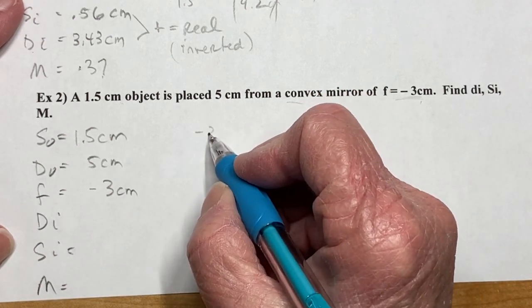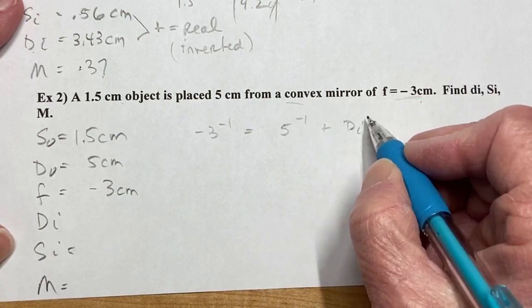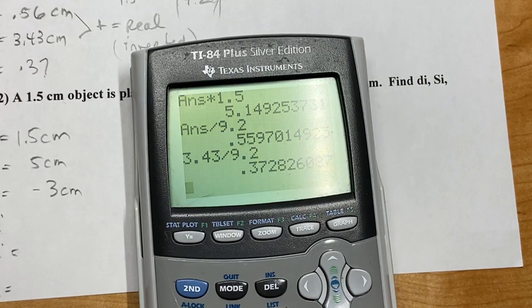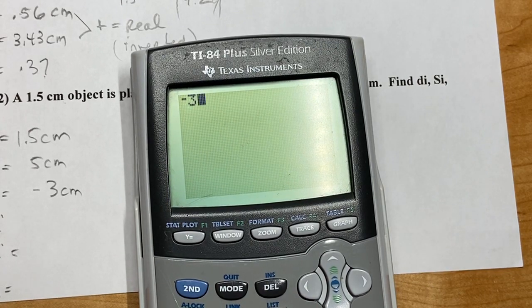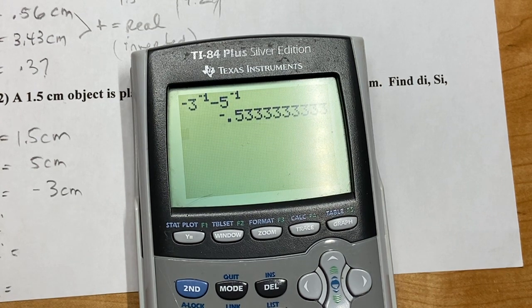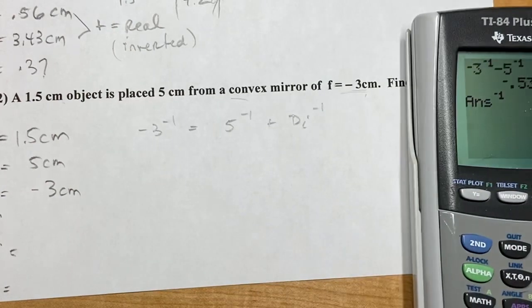All right, so negative 3 to the minus 1 equals 5 to the minus 1 plus di to the minus 1. All right, so negative 3 to the minus 1 minus 5 to the minus 1 equals, make sure you hit the equals, and then minus 1 one more time. So we're going to take that as negative 1.88.